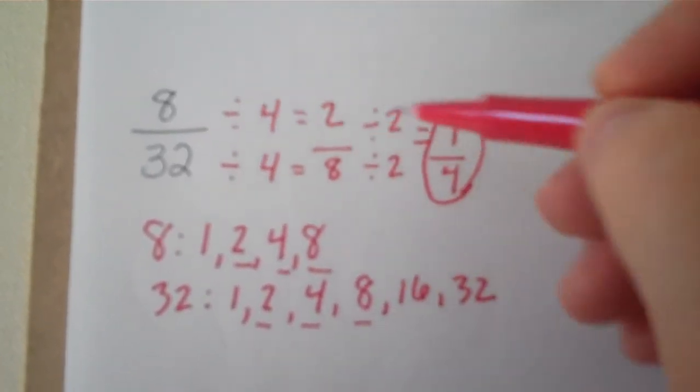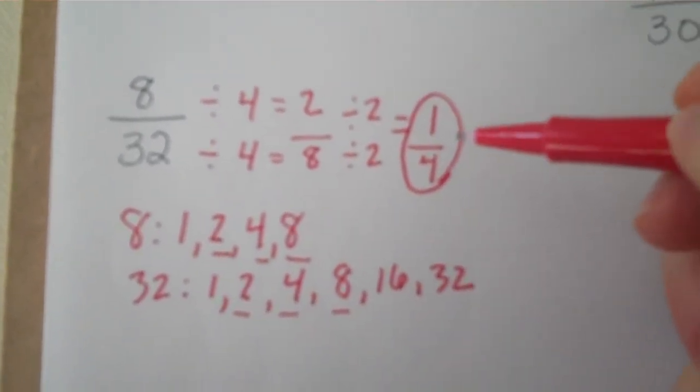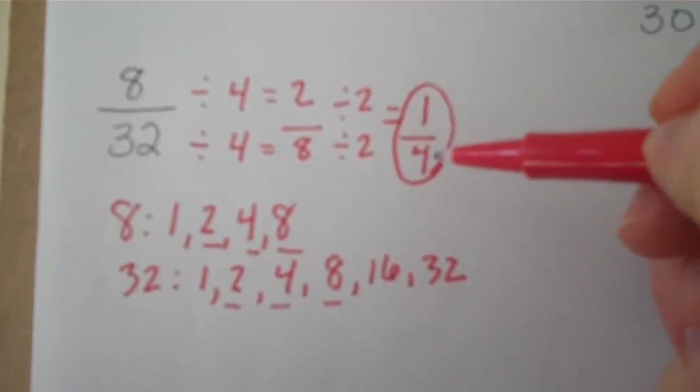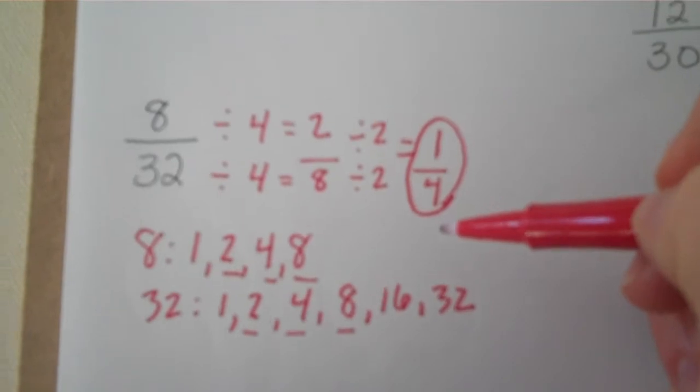8 thirty-seconds written in simplest form is 1 fourth. They're equivalent fractions, so they mean the same thing, but in 1 fourth, the numerator and denominator don't share any factors. Now, you try.